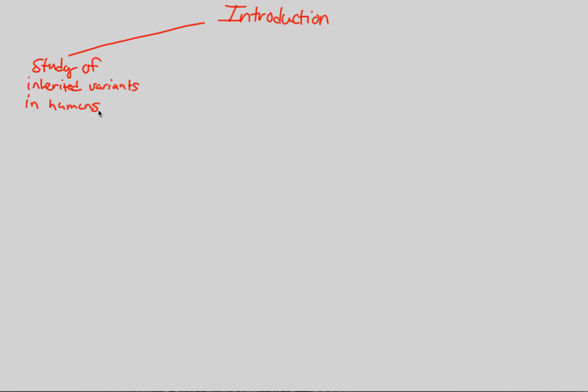And in order to study this, we have to overcome some basic problems of this study. In order to study human genetics, we have to figure out a way beyond the following problems. So we'll say problems of study. And when we say study, we mean the study of human genetics.